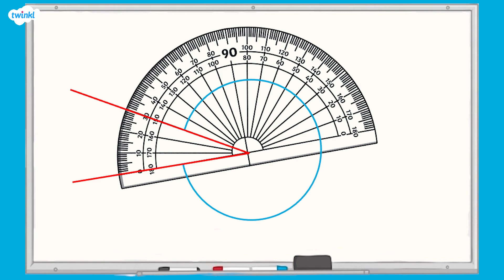Now let's have a look at how to measure a reflex angle. You can do this by measuring the inner angle and then subtracting it from 360 degrees. In this example,